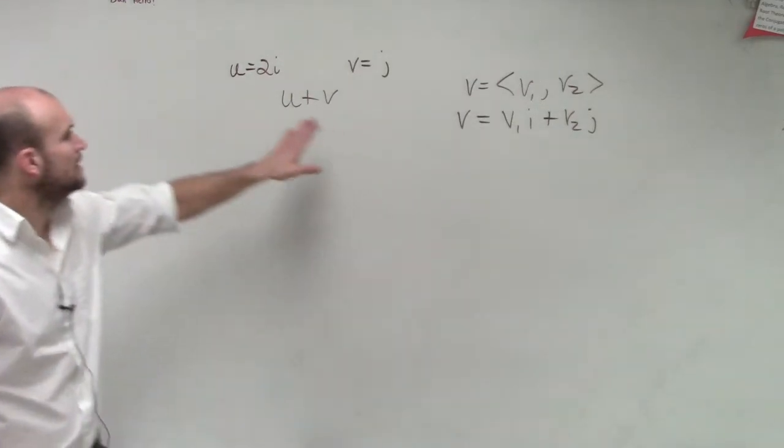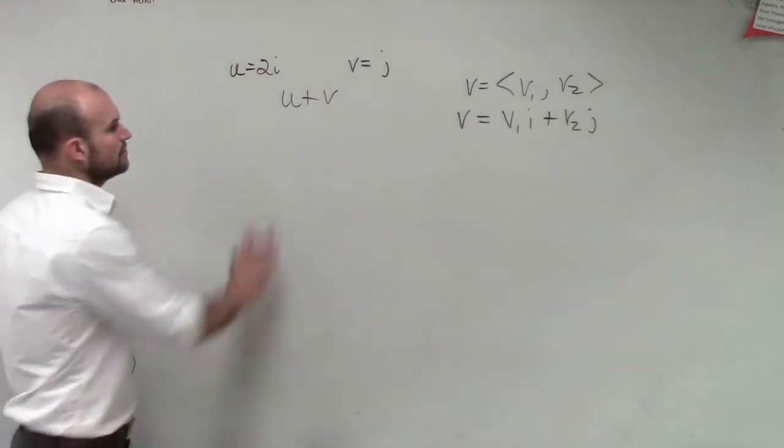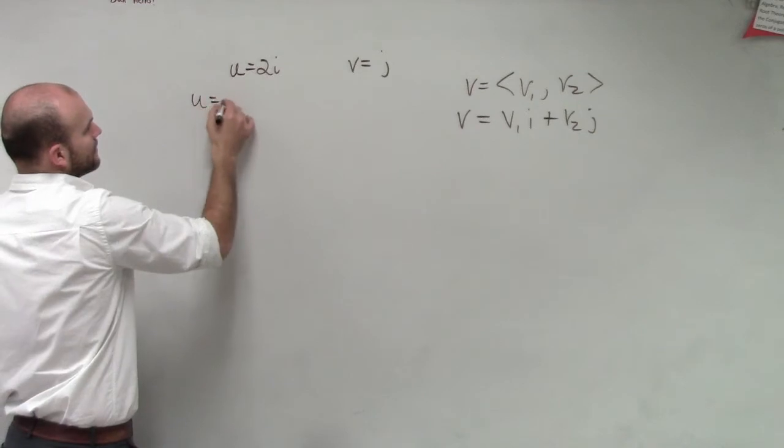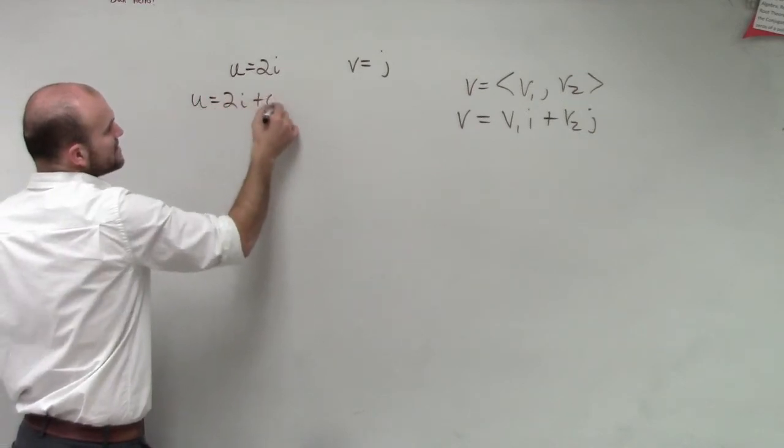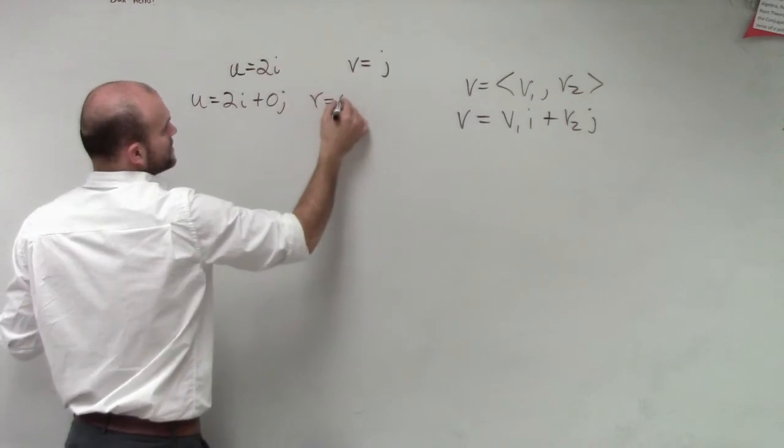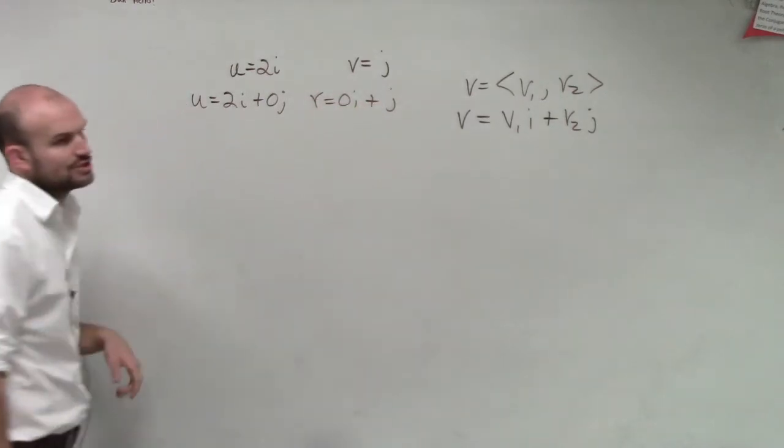And that's simply it. So let's go ahead and rewrite these in that format. So u, I'll do u plus i in a second, u is going to be 2i plus 0j. And here, we're going to have v equals 0i plus 1j, or just j.